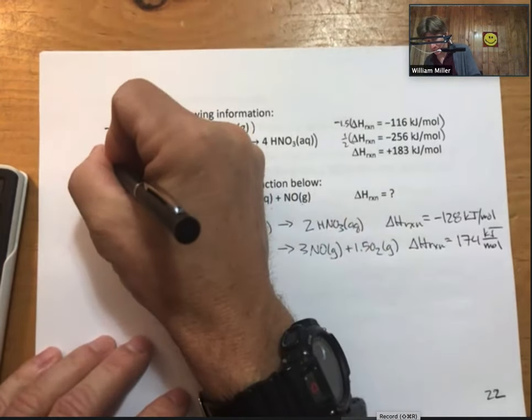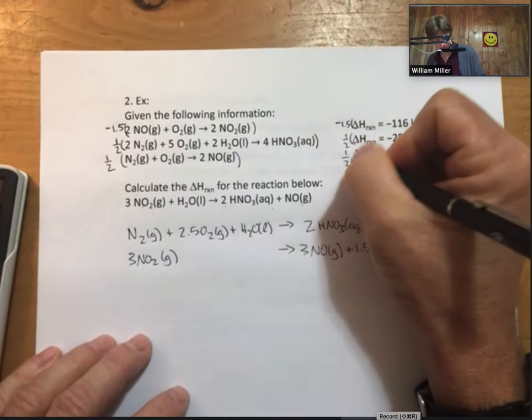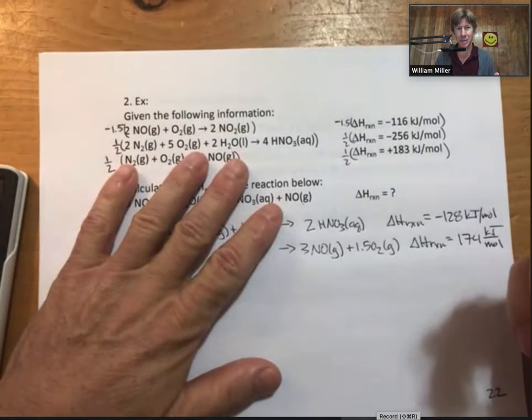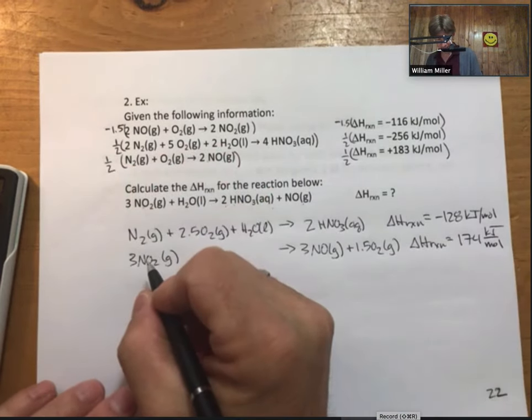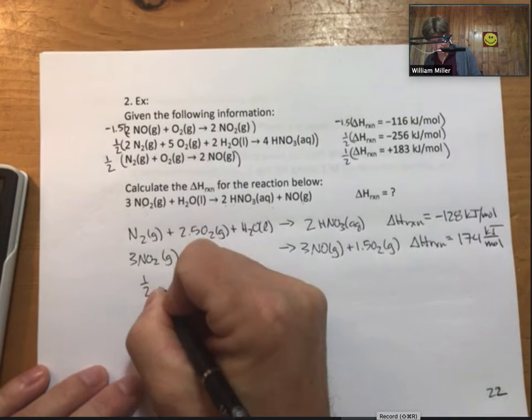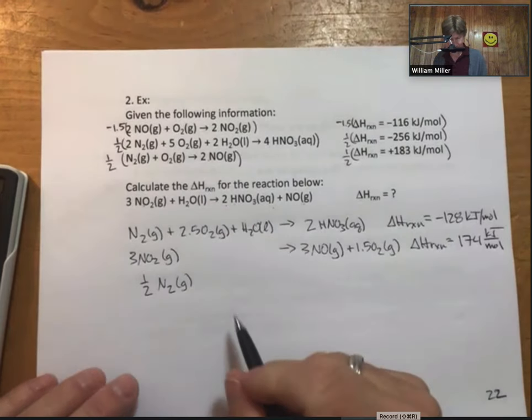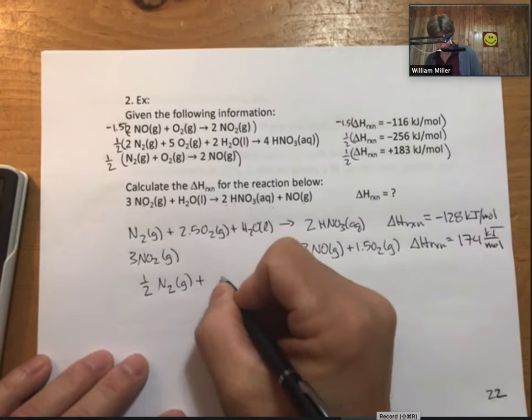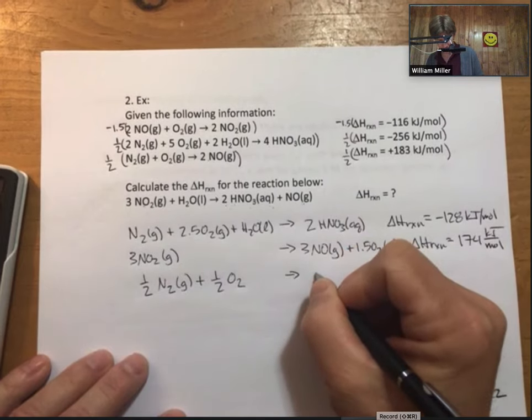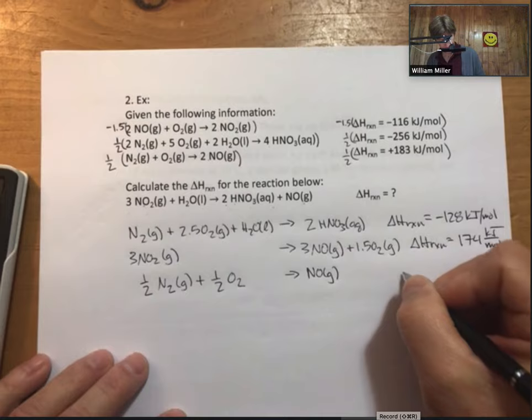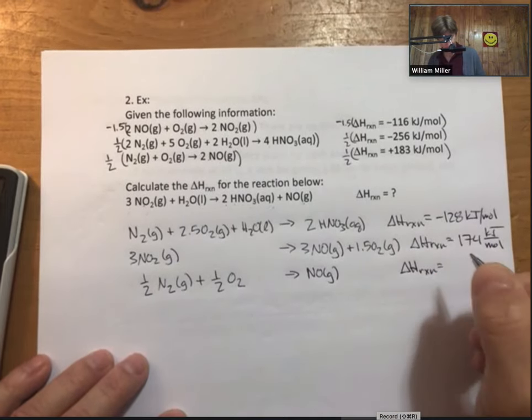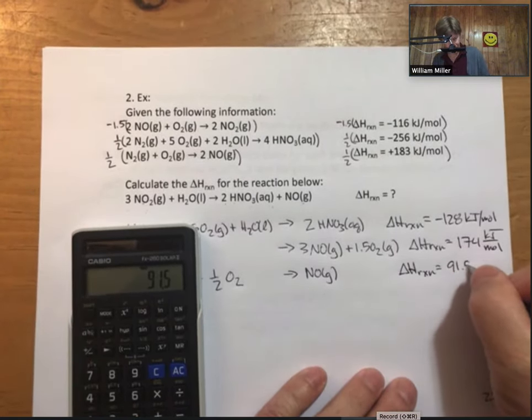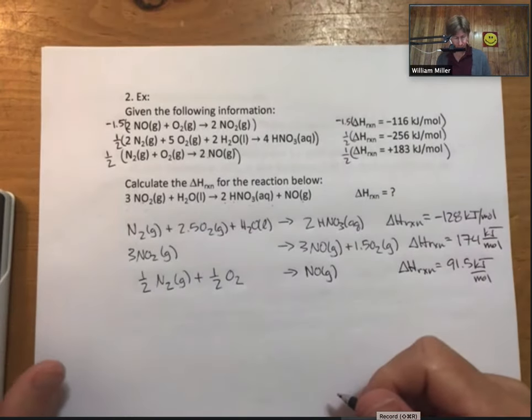Keep my fingers crossed that this works. If it doesn't work, I'm going to have to go get another piece of paper and start over again. Let's see. Now half N2. Oh, I hope this works. All right. So half O2 goes to NO. Half of 183 is 91.5. All right. Let's add them up. See what we got here.